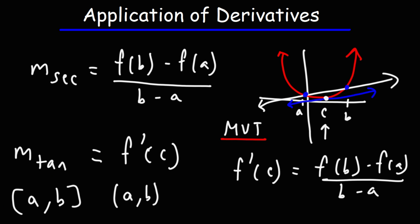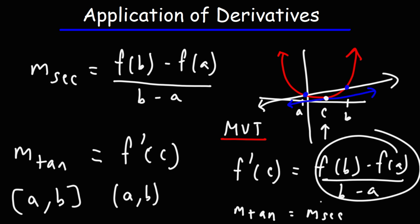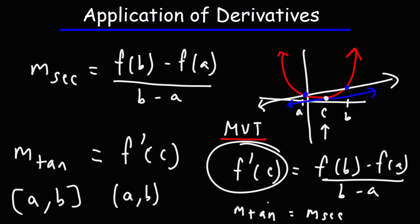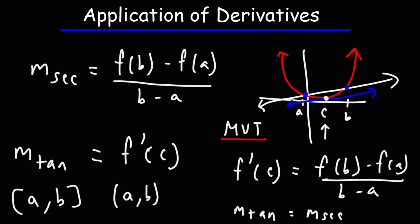For the mean value theorem, the slope of the secant line and the slope of the tangent line are the same at point C. The average rate of change formula gives you the slope of the secant line, and the instantaneous rate of change gives you the slope of the tangent line. When dealing with the mean value theorem, those two will equal each other.